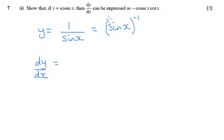So I'm going to move the power to the front. I'm going to take one off the power, and then I'm going to times by the differential of what I pretended was an x. I pretended sine x was an x, and when you differentiate sine x, you get cos x.